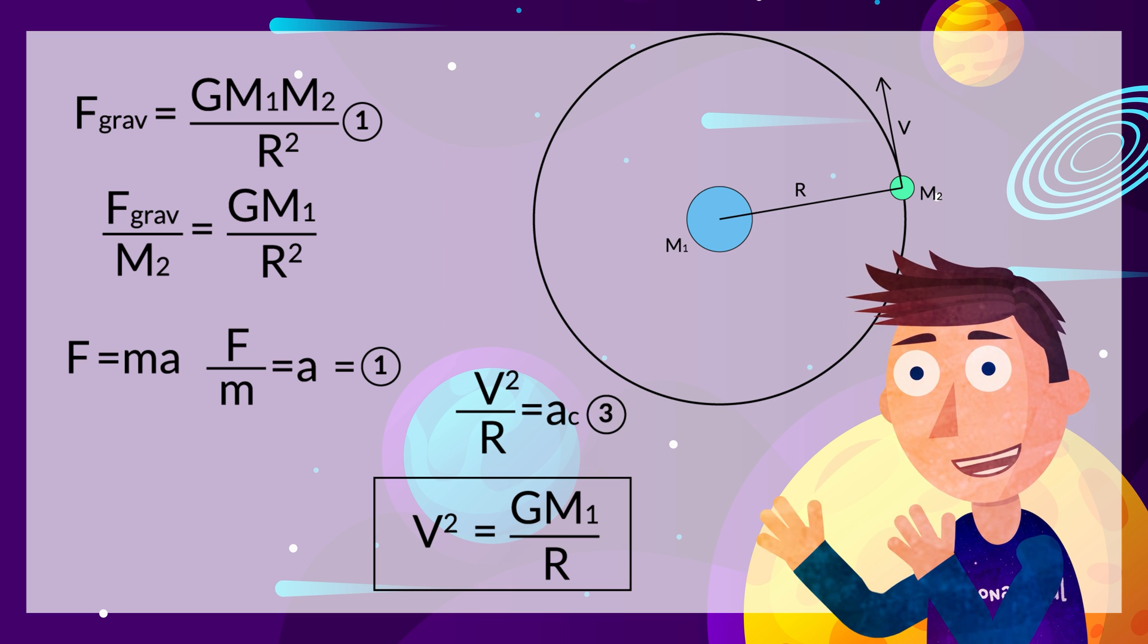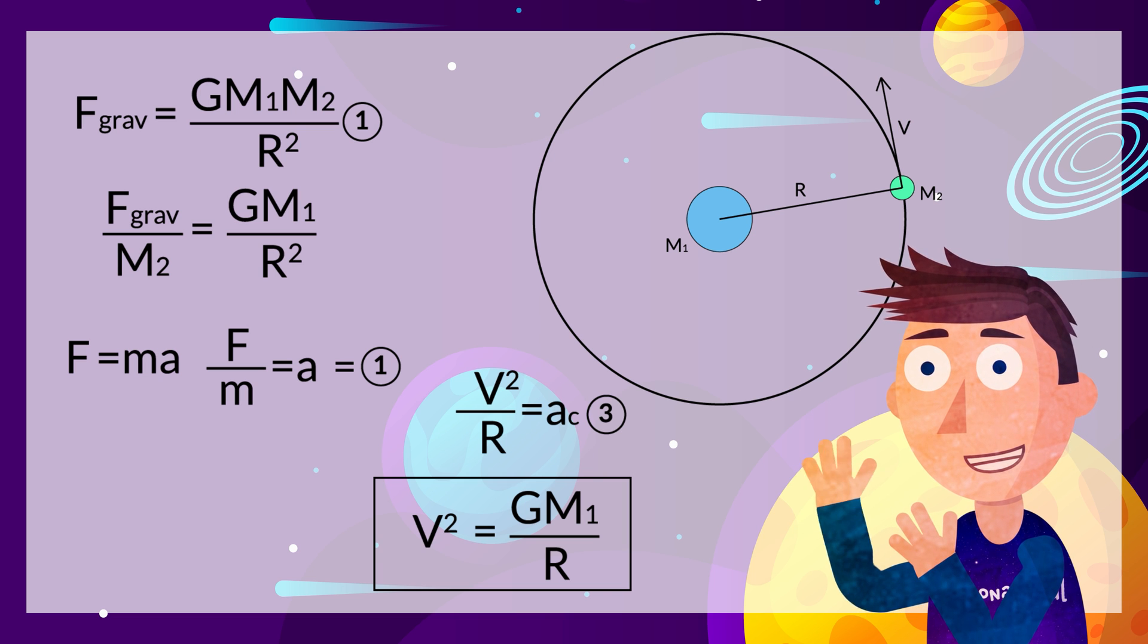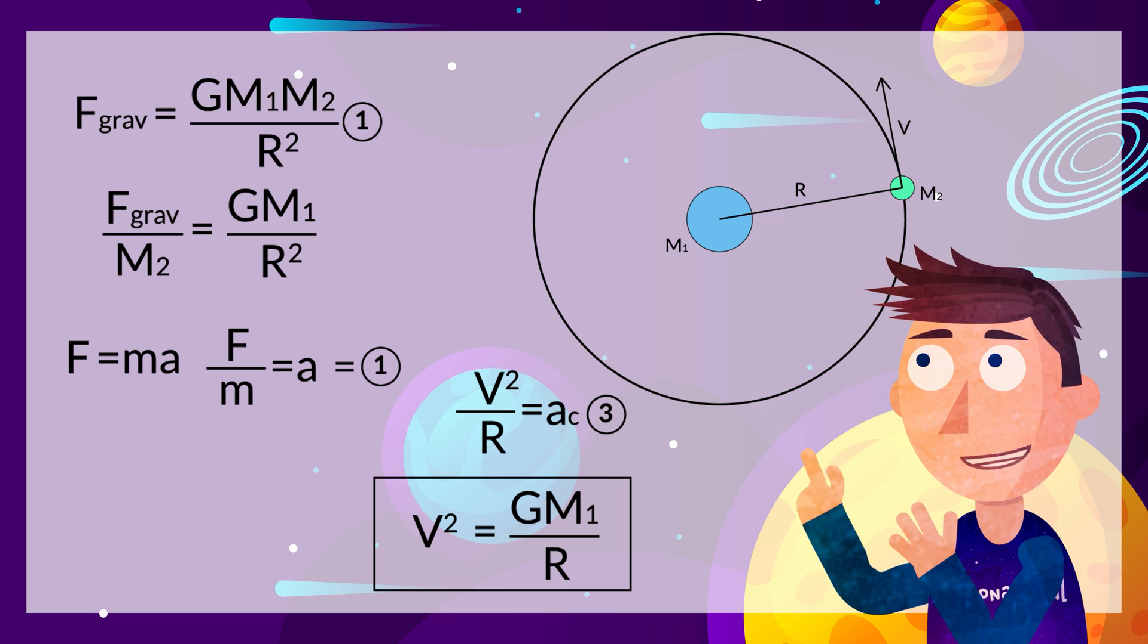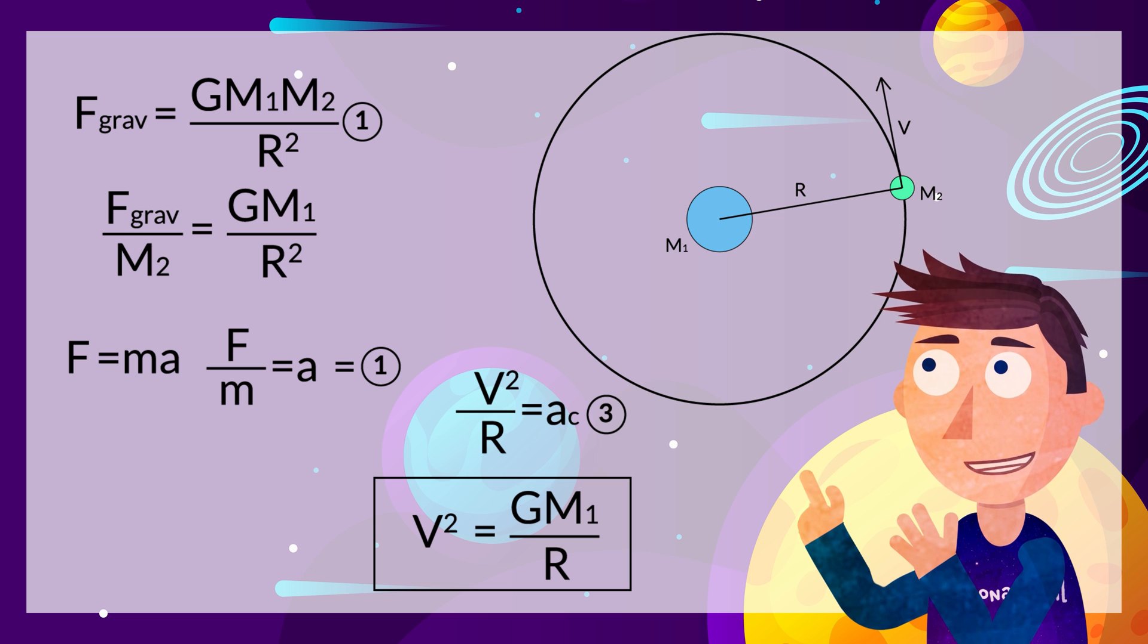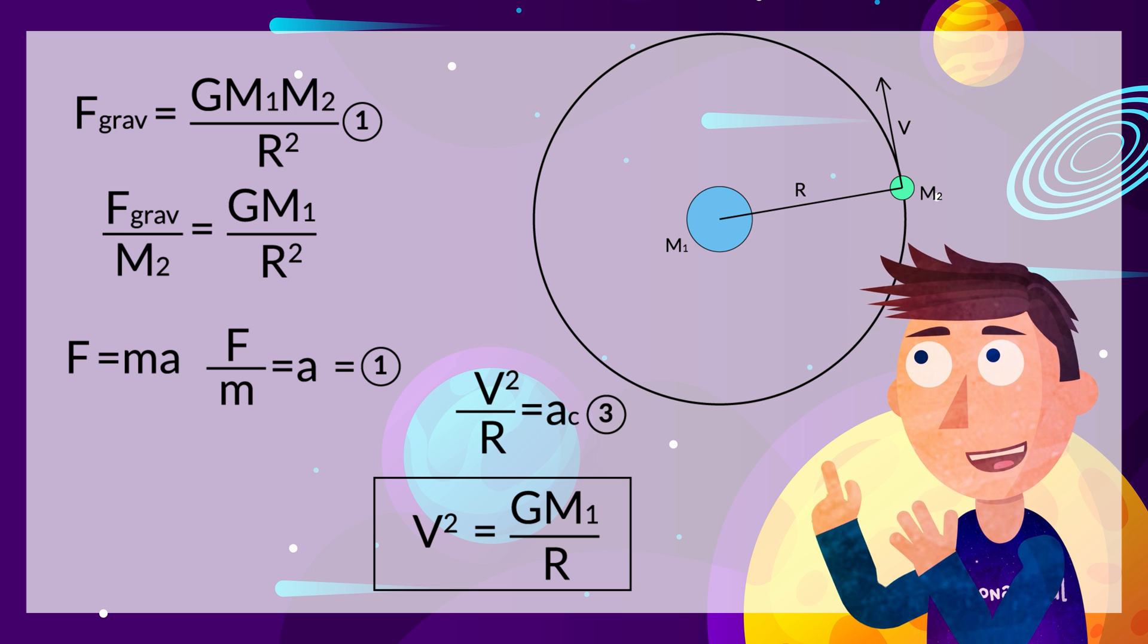Now setting the rearranged equation 1 equal to equation 3, we get this formula for the orbital velocity of an object which is equal to the gravitational constant G times the mass of the large object that is being orbited around divided by the radius of the object in orbit.